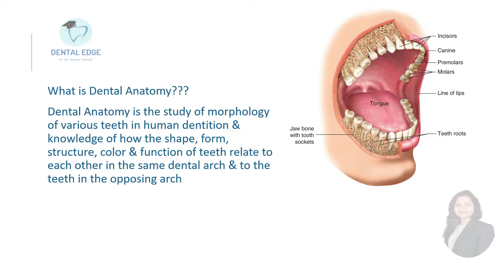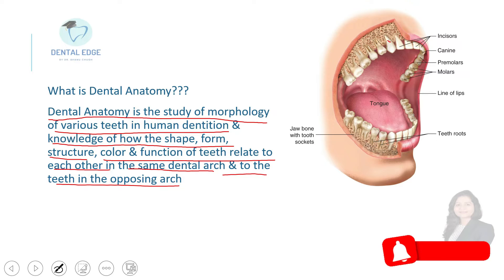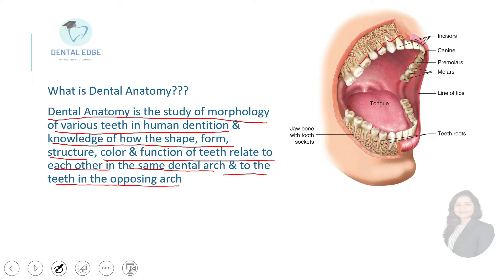So let's first understand what is dental anatomy. Dental anatomy is the study of morphology of various teeth in human dentition and knowledge of how the shape, form, structure, color, and function of teeth relate to each other in the same arch and to the teeth in the opposing arch.